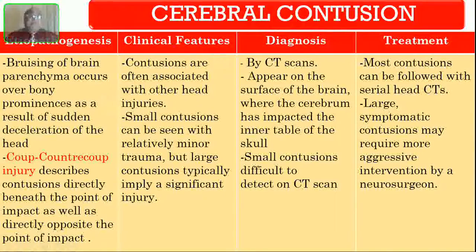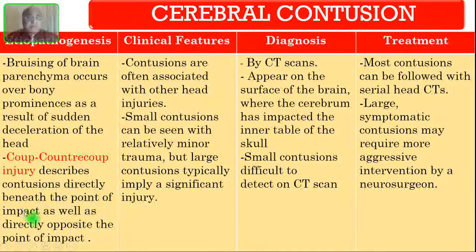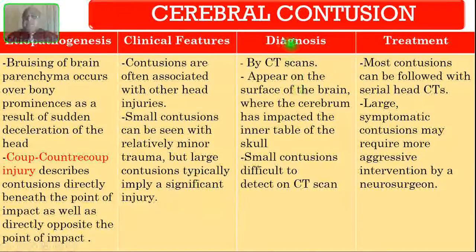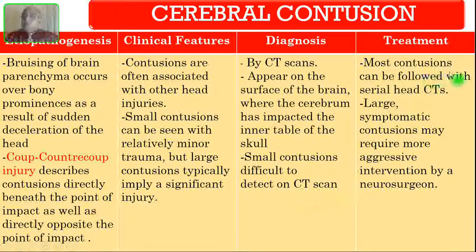The next type of head injury is cerebral contusion — bruising of the brain parenchyma over bony prominences as a result of sudden deceleration of the head. This may be a coup or contrecoup injury, describing contusions directly beneath and directly opposite the point of impact. Small contusions can be seen with relatively minor trauma, but large contusions imply significant head injury. Diagnosis is by CT scan, appearing on the surface of the brain where the cerebrum has impacted the inner table of the skull. Most contusions can be followed with serial head CTs; however, large symptomatic contusions may require more aggressive neurosurgical intervention.